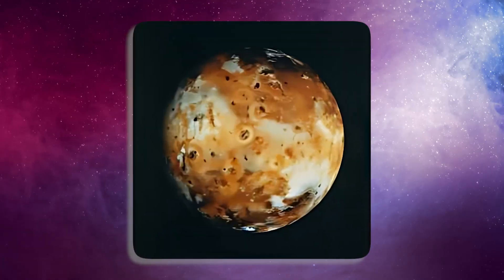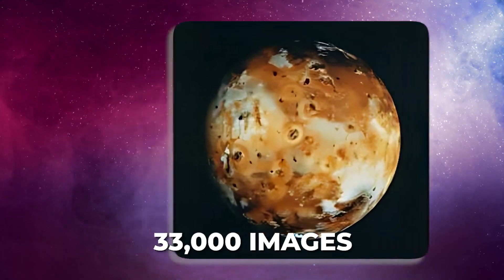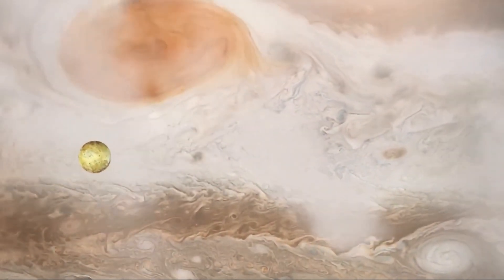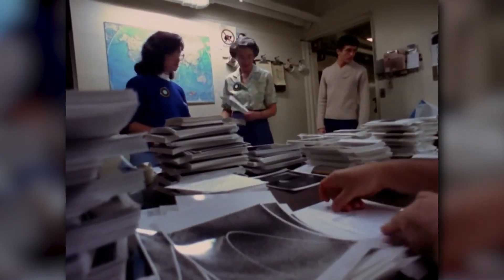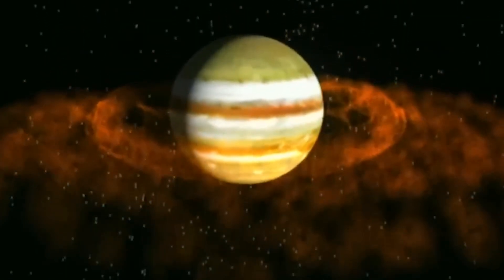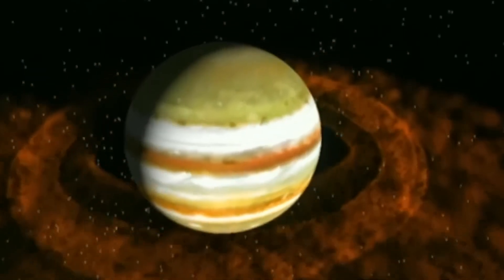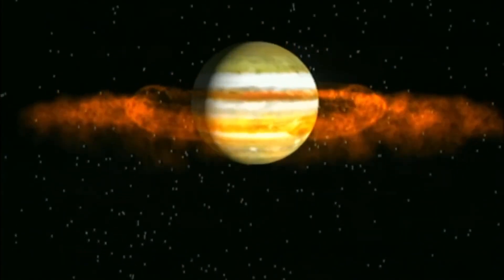The Voyagers, with their extraordinary imaging capabilities, captured more than 33,000 images, unveiling the mesmerizing beauty of Jupiter and its diverse moonscapes. Among their many surprising discoveries, the existence of faint rings around Jupiter stood out, adding a new layer of fascination to the gas giant.